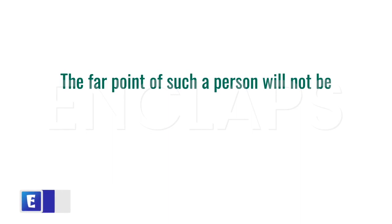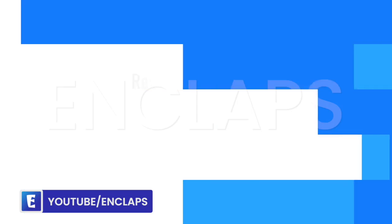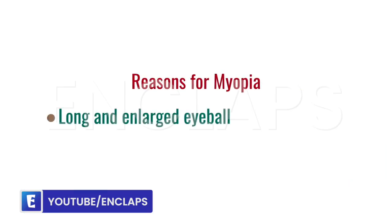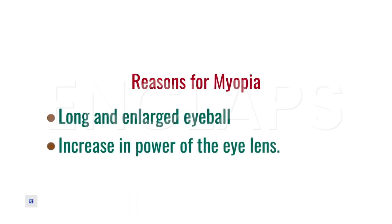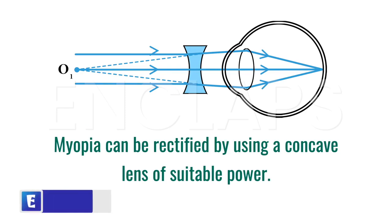The far point of such a person will not be at infinity. Instead, it will be at a definite distance from the eye. What shall be the reason behind this defect? They are the long and enlarged eyeball and the increase in the power of eye lens. Myopia can be rectified using a concave lens of suitable power.